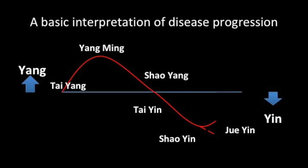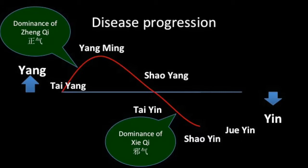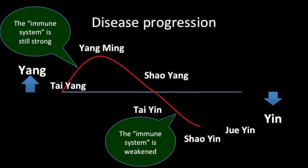This slide shows a possible model for the progression of disease according to the Shang Han Lun, starting at the exterior with the Taiyang channel and progressing towards the yin channels. In the yang channel diseases, the zheng or upright qi is still strong enough to offer resistance to the disease, while in the yin stages the xie or bad qi has the upper hand. This would be analogous to saying that at the yang stage the immune system is still strong and fighting off the pathogens with fever, while at the yin stage the immune system is considerably weaker.